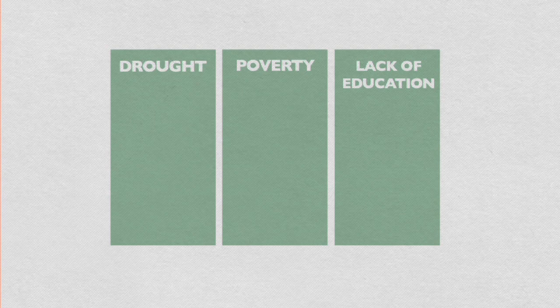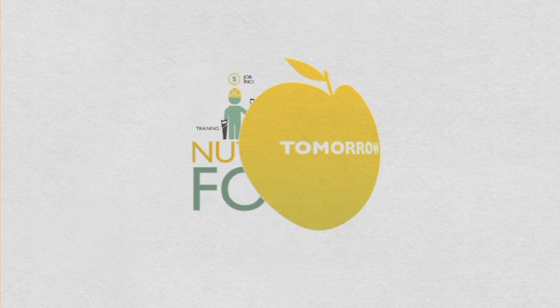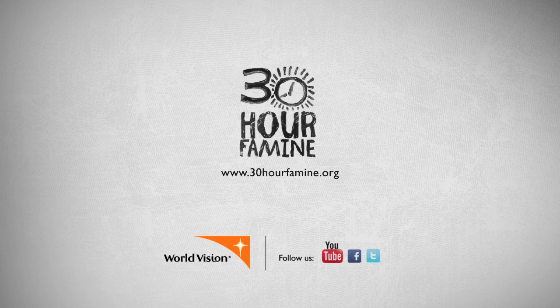So how can we fight hunger? By giving hungry families the tools they need to feed themselves. By investing in their economic development, they can earn better incomes and buy nutritious food, not just today, but for tomorrow, and whatever uncertainty tomorrow might bring. Do World Vision's 30-hour famine and help build a better world for children.